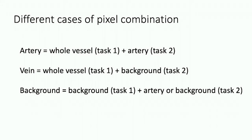Since we have obtained the predicted results for both artery and veins, we need to define the overlap pixels between the two classes. If a pixel is classified as whole vessel in task one and artery in task two, we say it is artery. If it is classified as whole vessel in task one but background in task two, we classify it as vein. If it is background in task one and artery in task two, we say this is background.